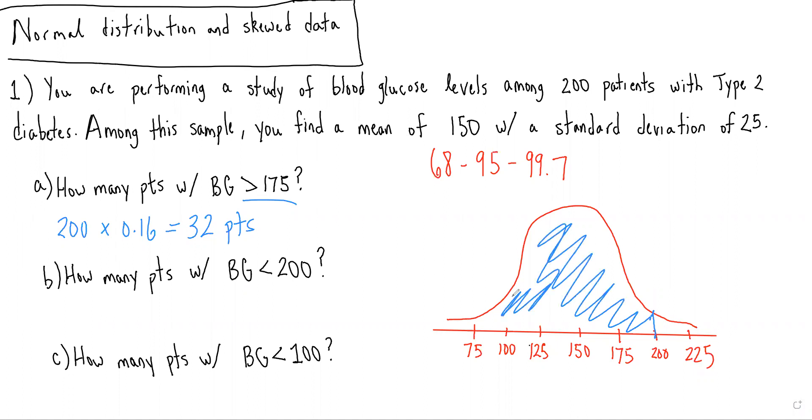So we remember that 95% of our data should fall within two standard deviations of the mean, such that we know, we know again, that 50% of our data will be here.